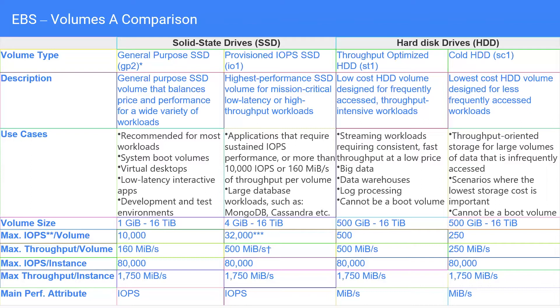The third one is throughput optimized — and remember, this is not SSD, this is HDD. Since it is HDD it is of lower cost. It is designed for frequently accessed but throughput-intensive workloads. Then we have cold HDD. 'Cold' itself means it is infrequently accessed. Cold HDD is the lowest cost option because it is HDD and is designed for less frequently accessed workloads.